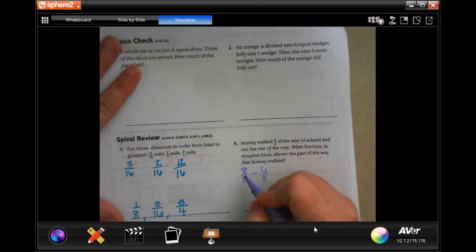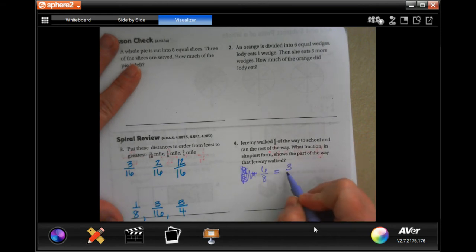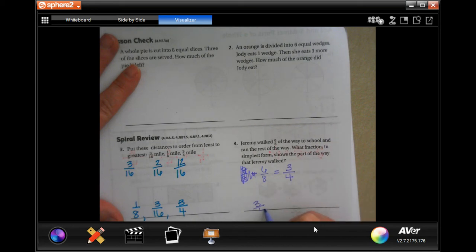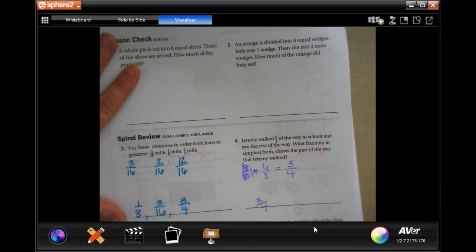So we don't even have to do that part, it just wants to know this in simplest form guys. Well, the number that goes into both of those is going to be 2. So 2 goes into 6 three times and 2 goes into 8 four times, three quarters.